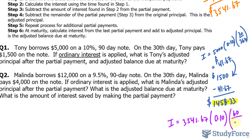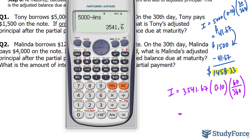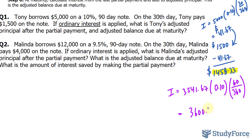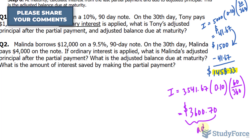I = 3,541.67 × 0.10 × 60/360, since there were 60 days remaining, and ordinary interest means we use 360. That gives us $59.03, rounding up. Adding that to the adjusted principal of $3,541.67 gives us $3,600.70 — wait, the result is $3,670. That is what we'll owe at the very end. We call this the adjusted balance.